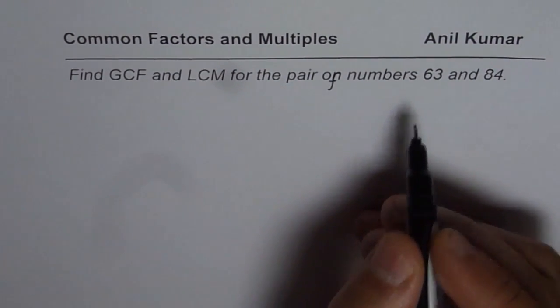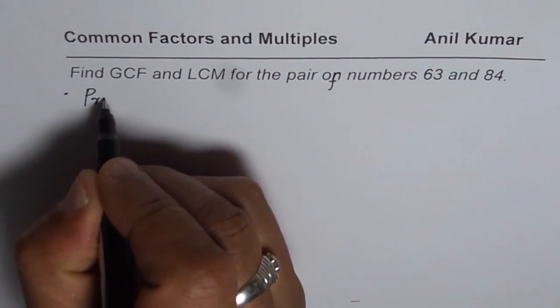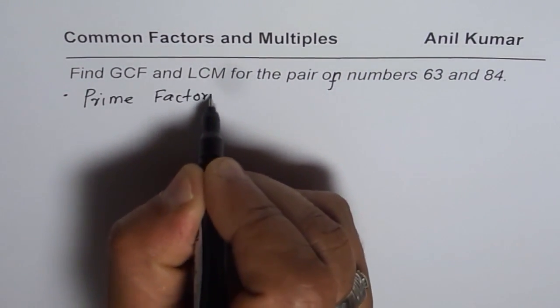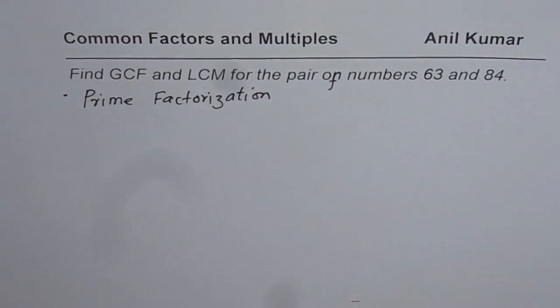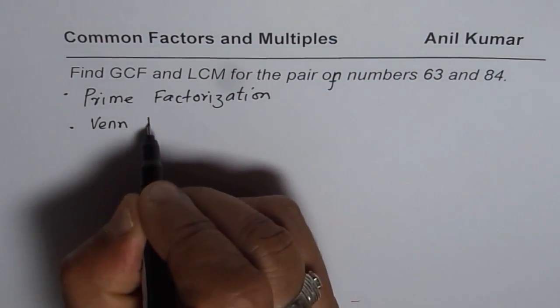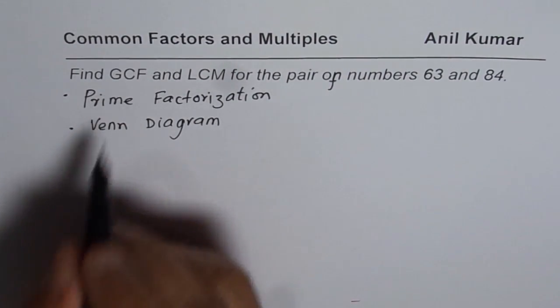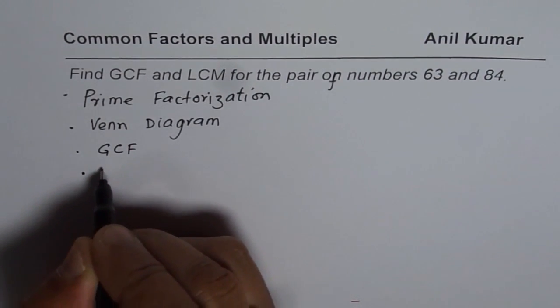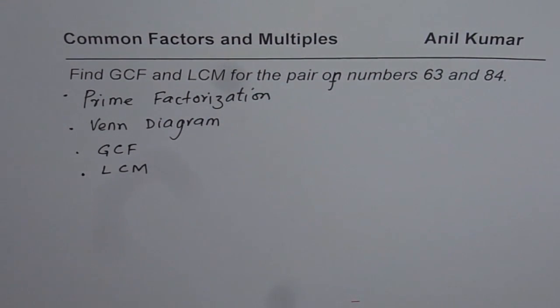We will follow these steps. First step will be to write prime factors, that means we will do prime factorization. Once we do prime factorization of each number, we will create a Venn diagram, and then find the greatest common factor and least common multiple. So these are the steps which we are going to follow.